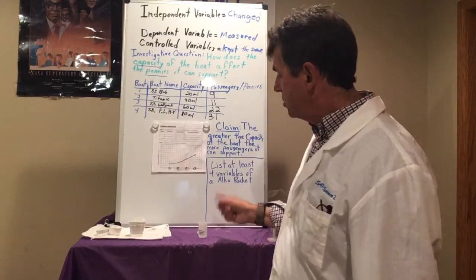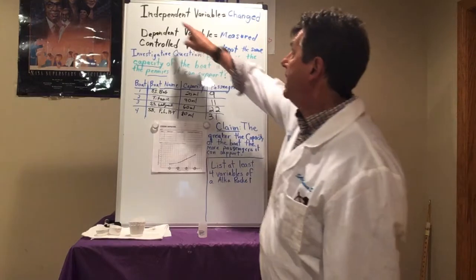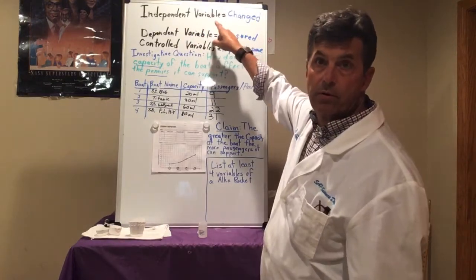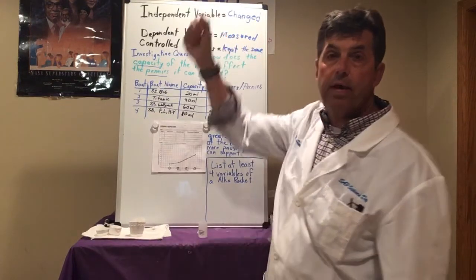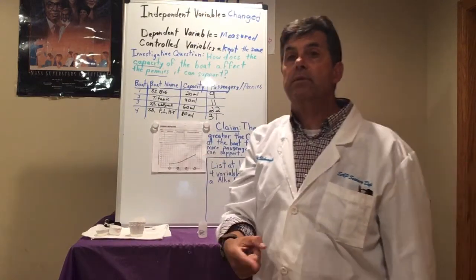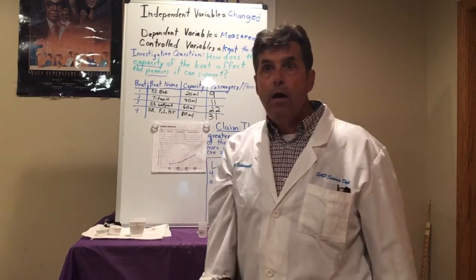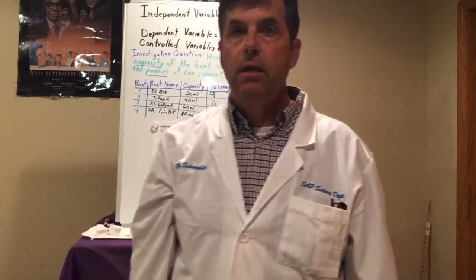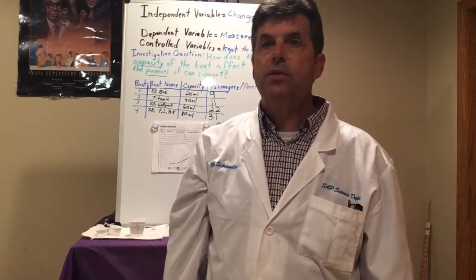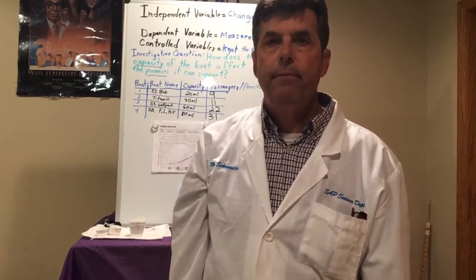Think of the four things you could change about this system — those would be independent variables. We're sorting them out; we call it a variable sort. Submit those, we're going to talk about them tomorrow, and then we're going to test one. Have a great rest of your day. Let me know if you have any questions, shoot me an email. I can always set up a Google Meet in addition to our whole group one.